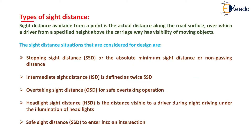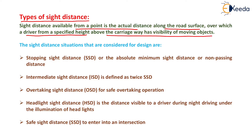Next topic is types of side distance. Side distance available from a point is the actual distance along the road surface over which a driver from a specified height above the carriageway has visibility of a moving object on the road.